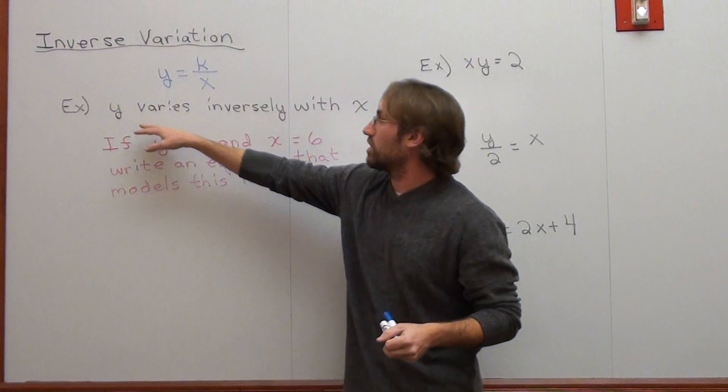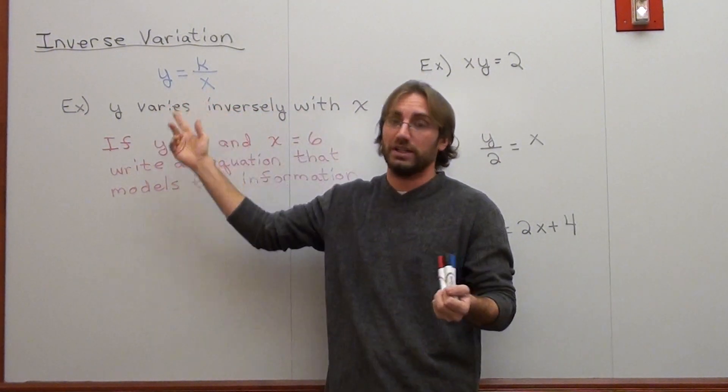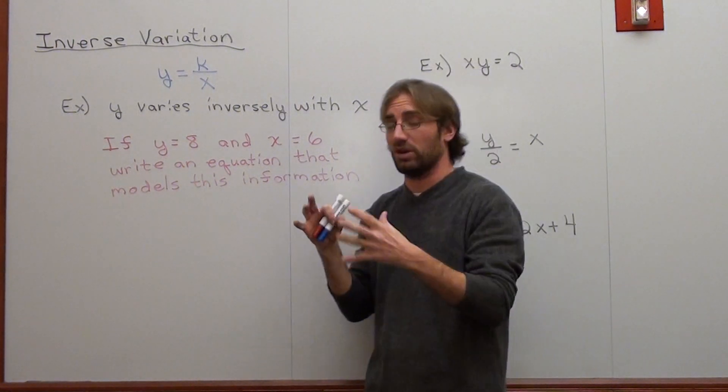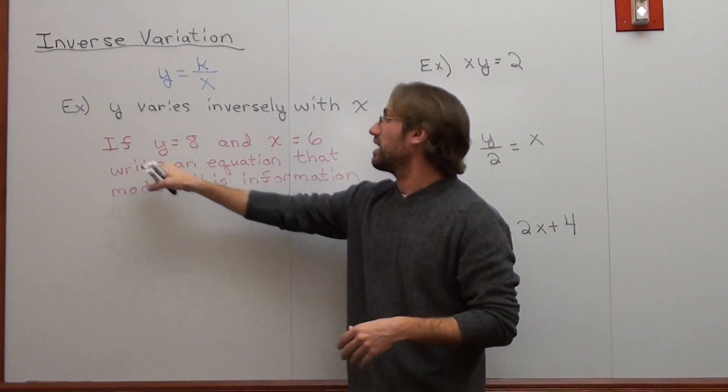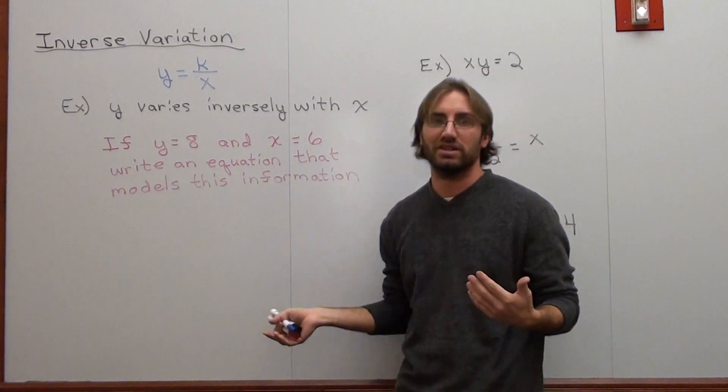So I've got this problem where it says y varies inversely with x. That's basically how you would read it. That's how you would write it. And my problem that I'm going to put into addition with it is if y equals 8 and x equals 6, write an equation that models this information.